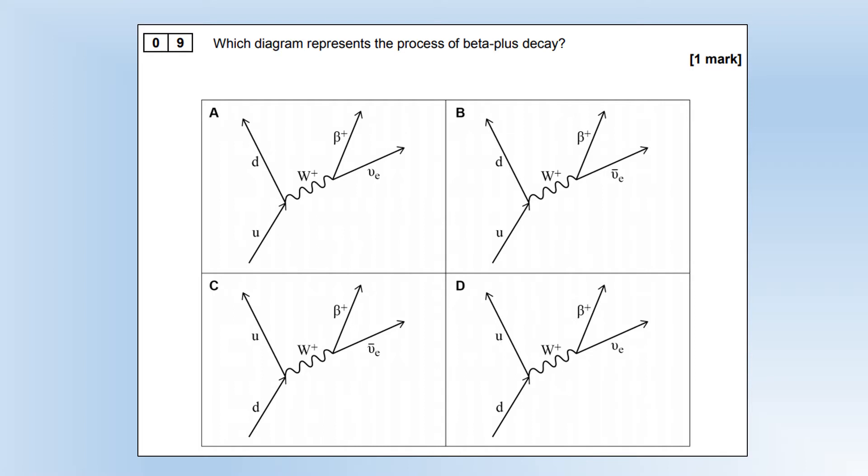We want the diagram representing beta plus decay. In beta plus decay, a proton turns into a neutron. So we want an up quark going into a down quark, either A or B. We also want an electron neutrino being produced to balance out the antiparticle positron.